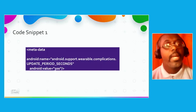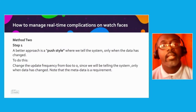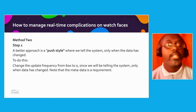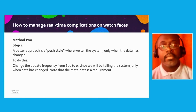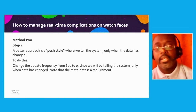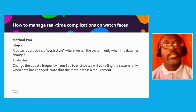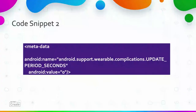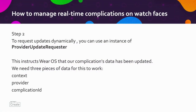A better alternative and better approach is a push style, where we tell the system only when the data has changed. To do this, change the update frequency from 600 to 0 in seconds, since we will be telling the system only when data has changed. This is the metadata requirement here — I will change it to 0. Additionally, to request updates dynamically, you can use an instance of a provider update requester. This instructs Wear OS that our complication data has been updated. We use three pieces of data: context, provider, and complication ID, as shown here.